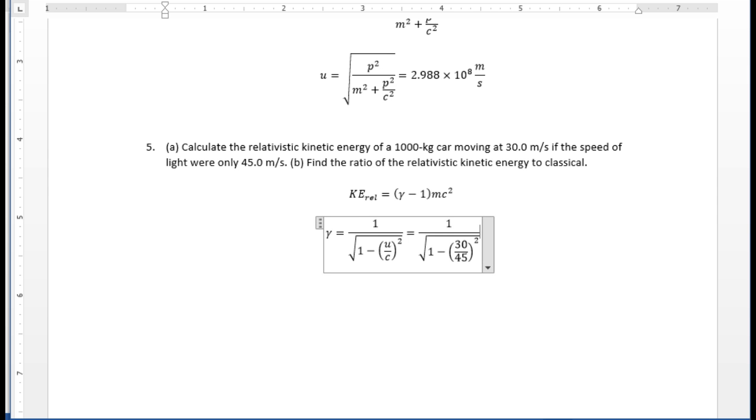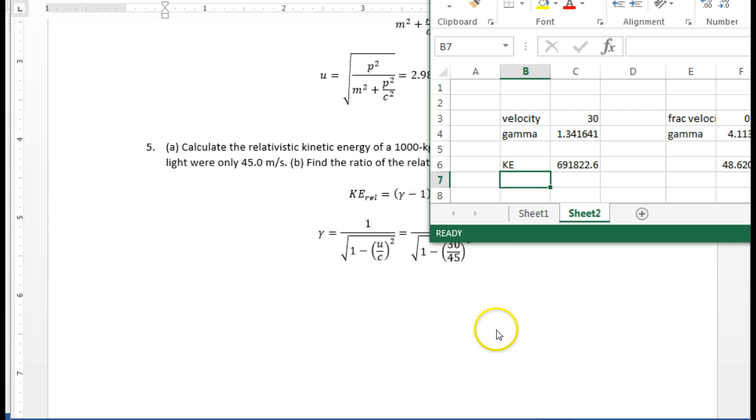And what did gamma work out to be? Gamma worked out to be 1.34.